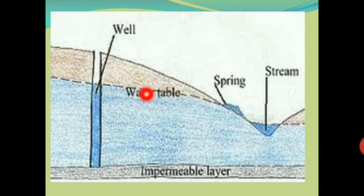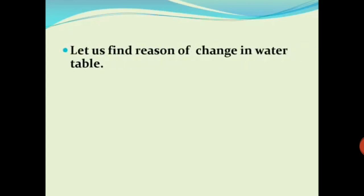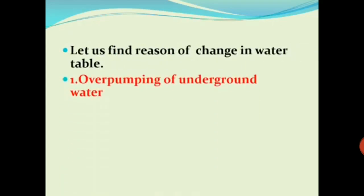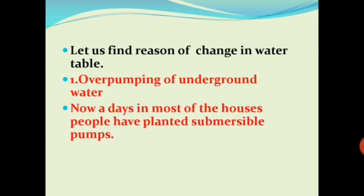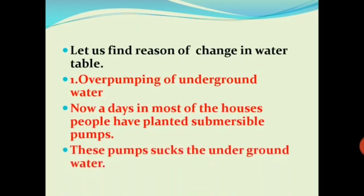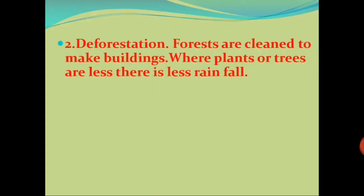What are the various reasons for the decreasing water table? First, over-pumping of underground water: nowadays in most houses people have installed submersible pumps which suck underground water, causing the water level to go down. Second, deforestation — cutting of trees. Forests are cleared to make buildings, and where there are fewer trees, there is less rainfall, and when there is less rainfall, the water table automatically decreases.